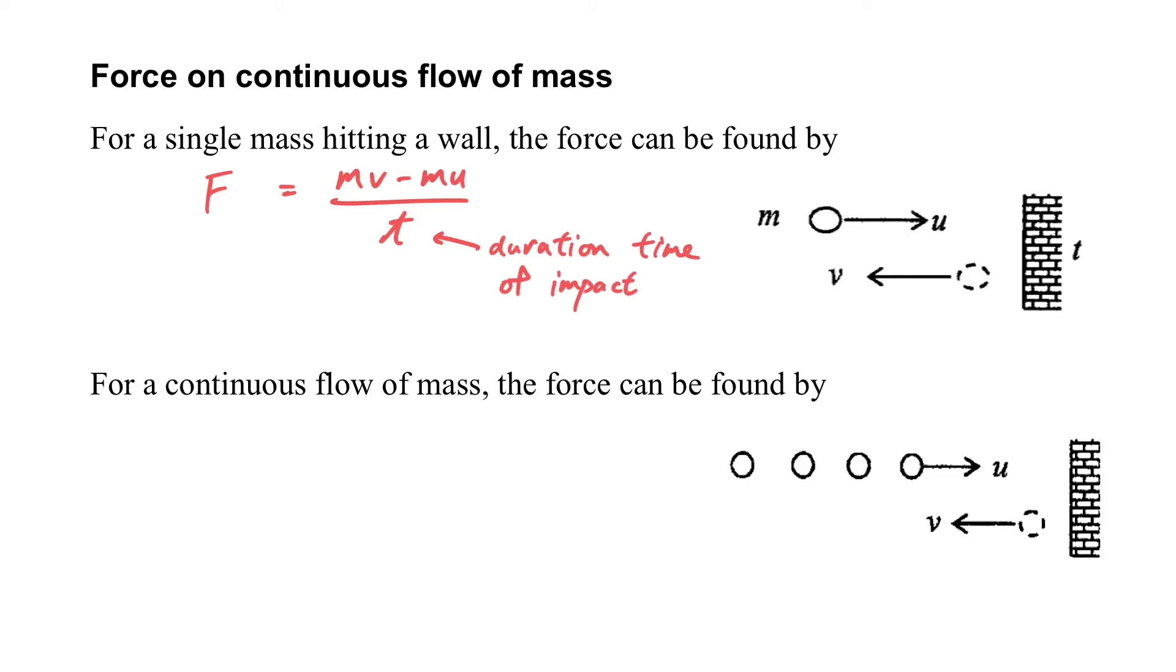What if we have more than one ball hitting the wall one by one? Can we still use this kind of equation to find the value? The answer is we can. We can still use F equals mv minus mu over t in this case. But this time, we have to group the time and the mass together, so that the m over t becomes the mass flow rate.